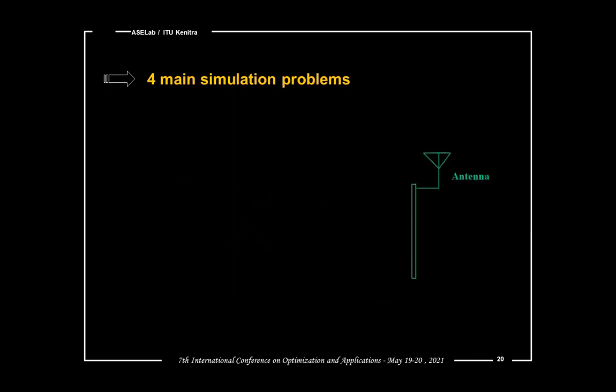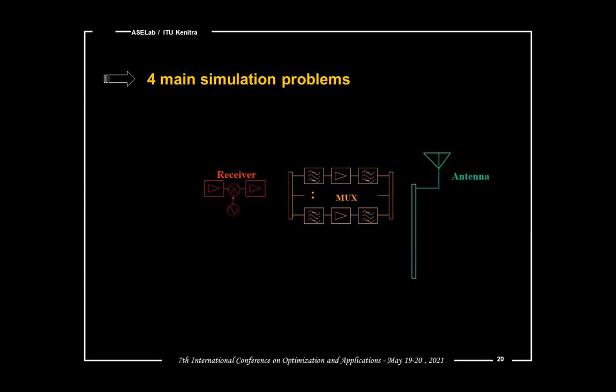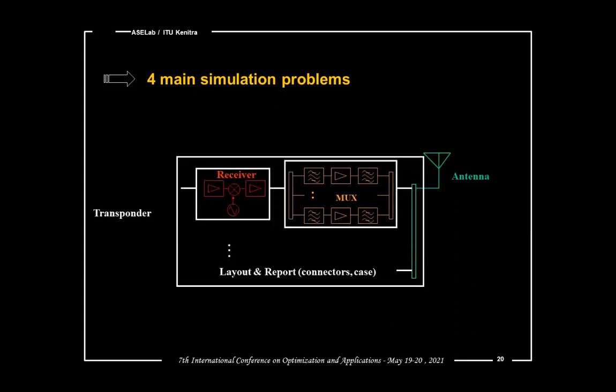Now let's see the main simulation problems. Analyzing the analog segments of the communication system, we can highlight four main simulation problems: the simulation of the antenna, the multiplexer, the receiver, and similarly the layout aspects with the problems of connectors and box, as illustrated here in the case of a satellite payload. We will focus more especially on the receiver simulation problem.